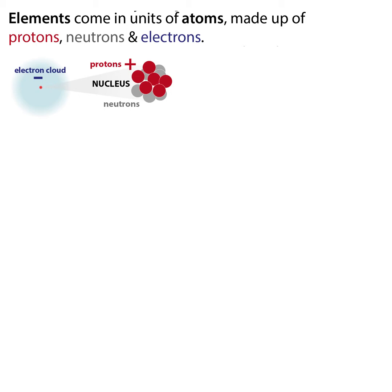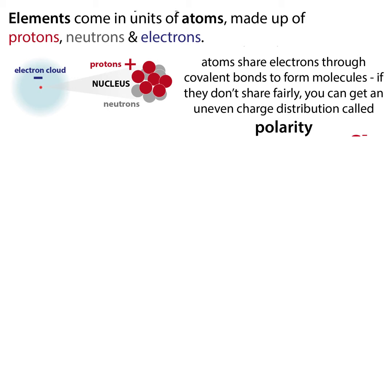You can get differences in charge if you have an unequal number of electrons. The number of protons defines an element — carbon always has six protons, oxygen always has eight. But the same is not true for electrons; you can have an imbalance and get a full charge. You can also have partial charges within a molecule that cancel each other out. When atoms share pairs of electrons to form covalent bonds, sometimes they don't share fairly — one of the sharers hogs the electrons. We call such hoggers electronegative, and this gives you polarity: the separation of partial charges within a molecule that might be neutral overall.